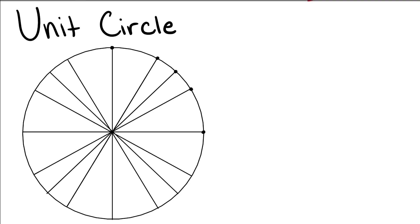The unit circle has a radius of one. This means we can use the unit circle to define specific trig values. Remember, our trigonometric functions are just sine, cosine, and tangent. So we can find these trig values at different points in our unit circle.